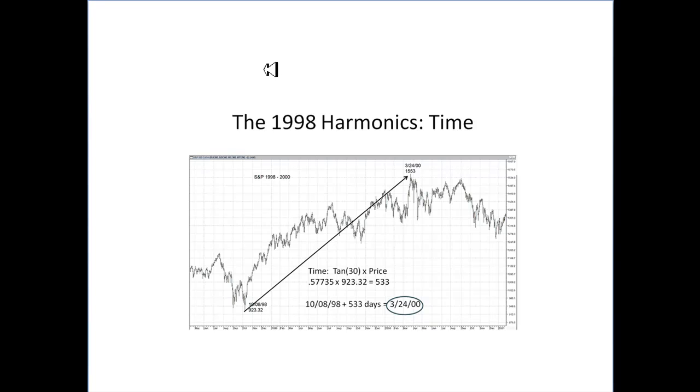This is how this information can be used. Note the 1998 crash low at 923.32 is a price. If we multiply that price times the tangent of 30 degrees, we get a number, 533. If taken as a time cycle in days, we find out that it gives us the exact date and no other of the bull market high in the year 2000. So, we see incorporated in the price is a time cycle, which gives us the date of the bull market peak.